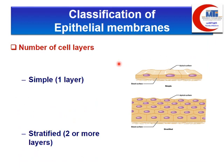Surface epithelium is also called epithelial membranes. These are divided according to the number of cell layers. If formed of one layer only, it is called simple epithelium. If formed of more than two layers, it is called stratified epithelium — 'strata' meaning layer in Latin.